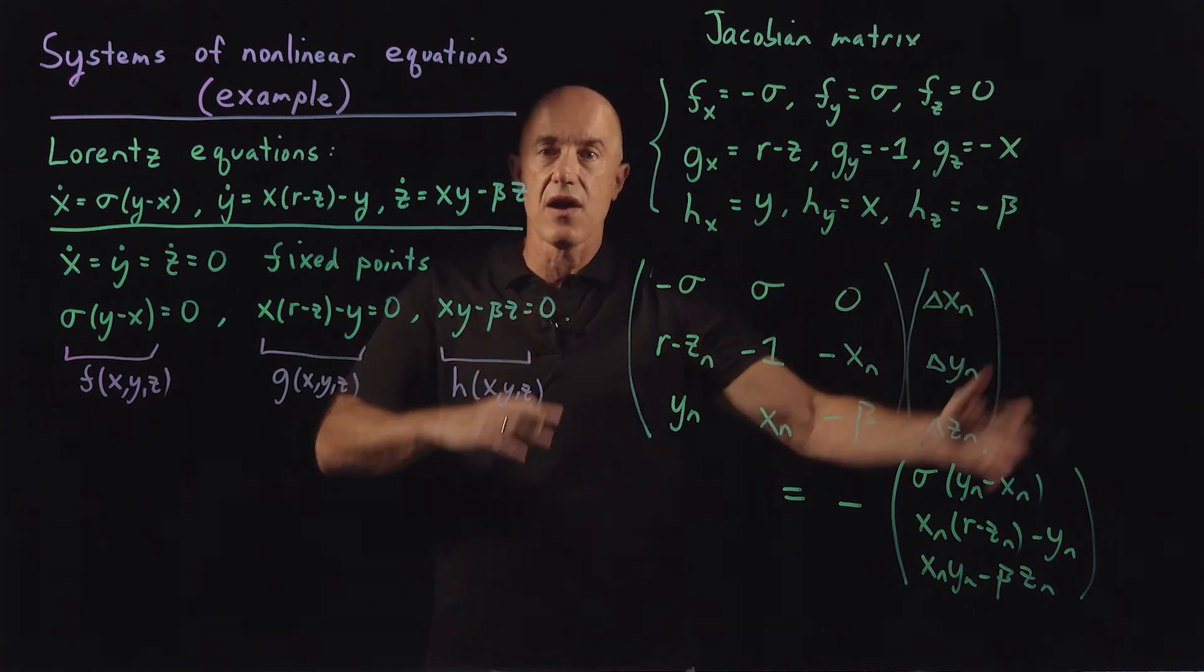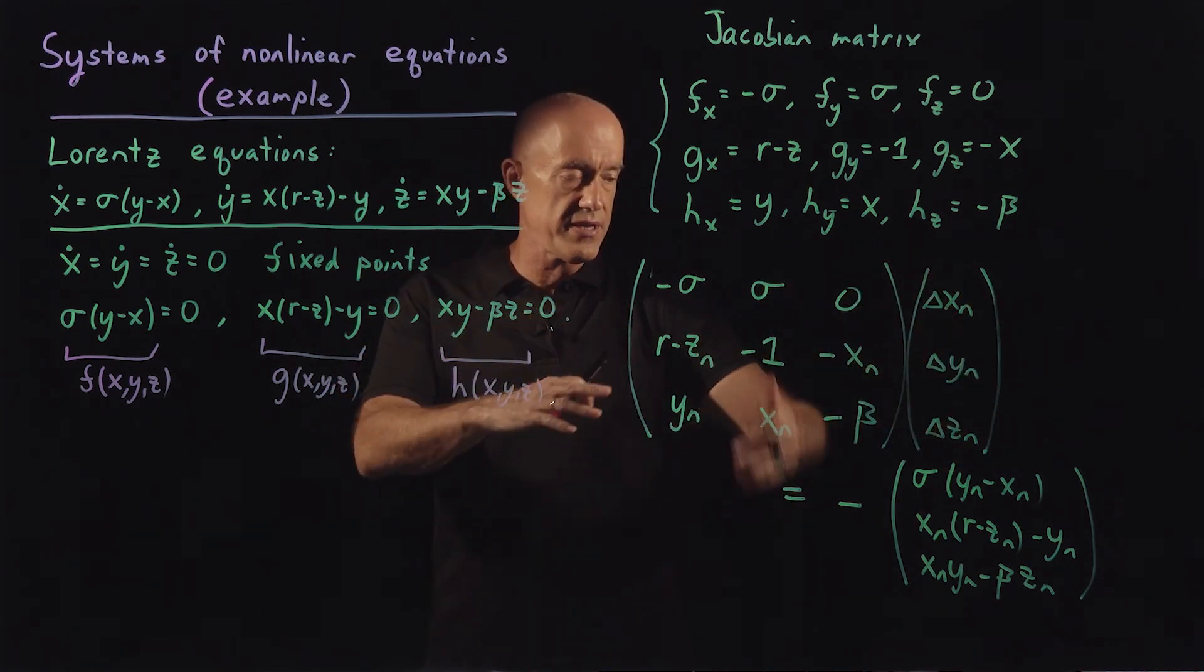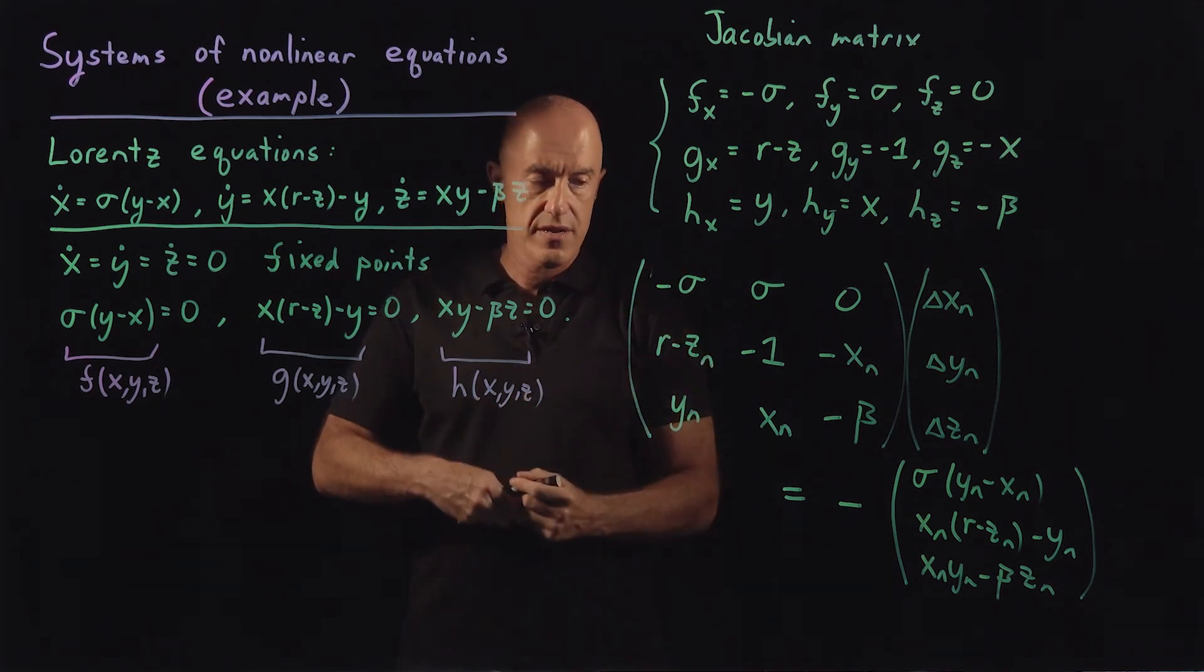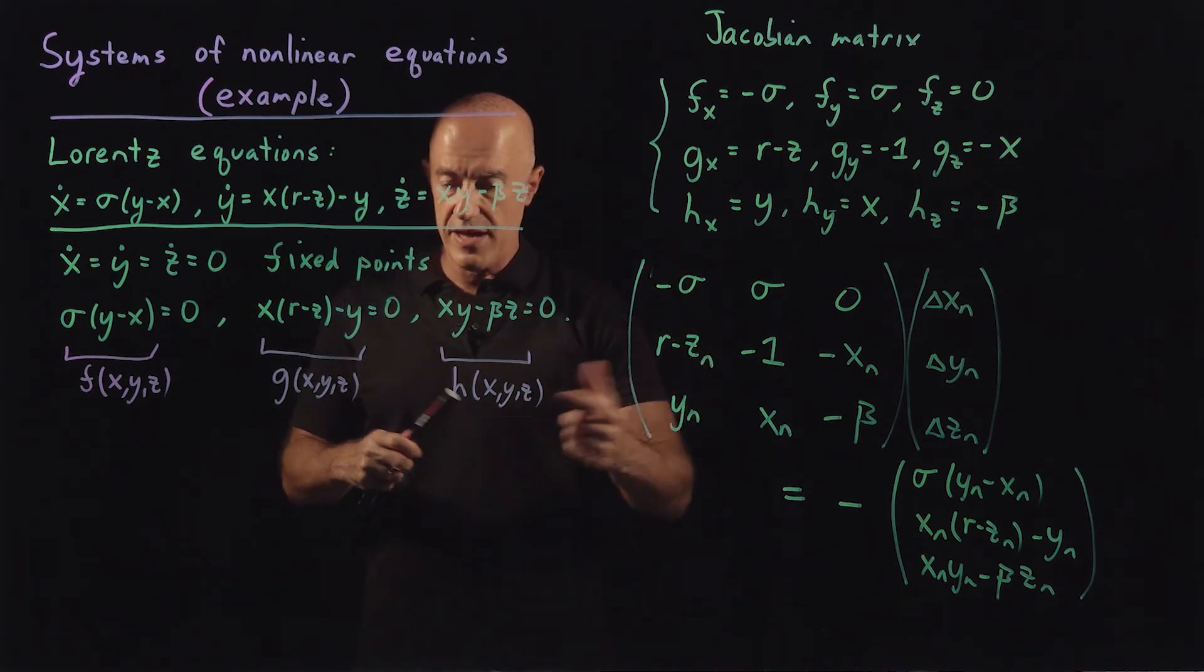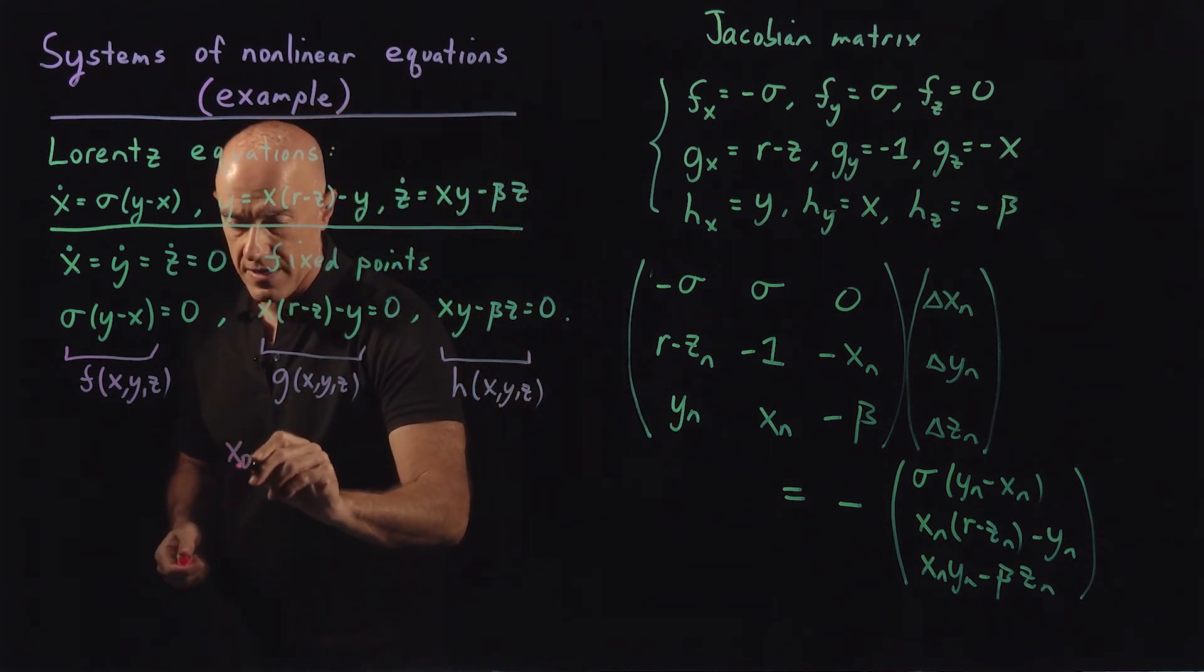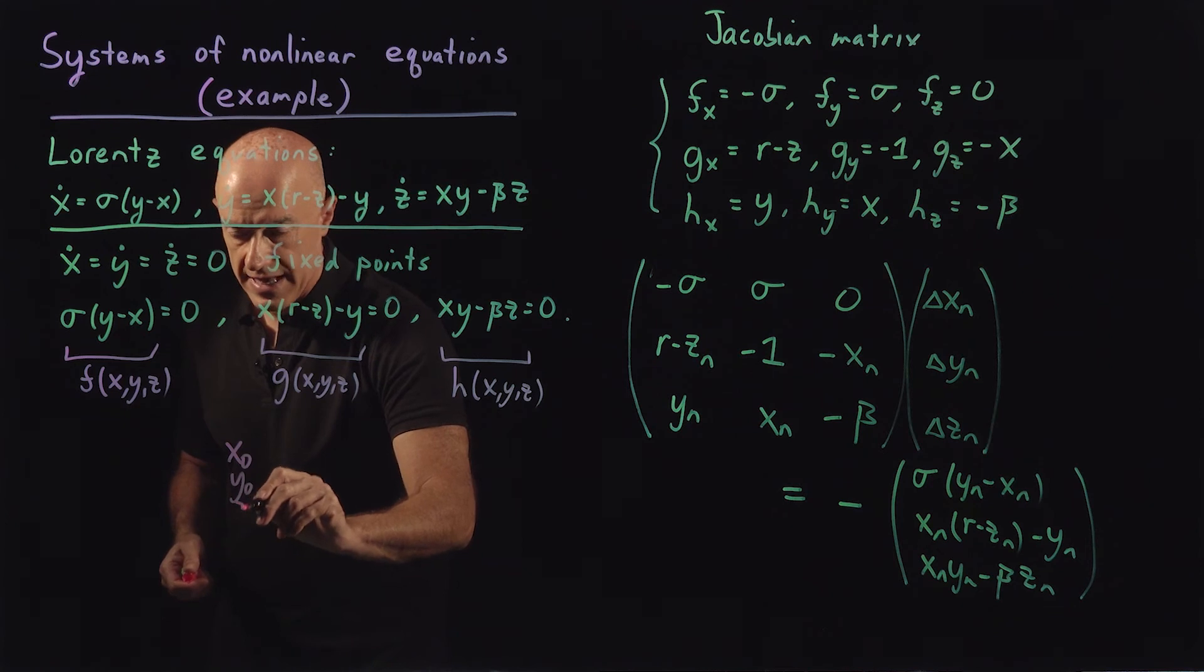And then this is our iteration of the Jacobian equation. So the way it works is you start with x_0, y_0, and z_0. So that's your initial value.